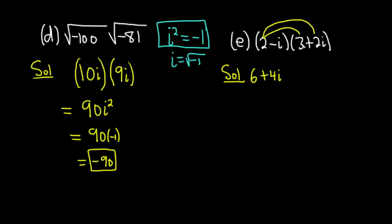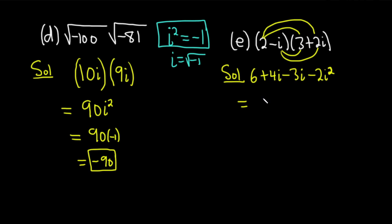Then take negative i and multiply by those same two terms. Negative i times 3 is negative 3i. And negative i times 2i is negative 2i squared. Combining: we have 6, then 4i minus 3i is i, and then minus 2i squared. Since i squared equals negative 1, minus 2i squared becomes plus 2.